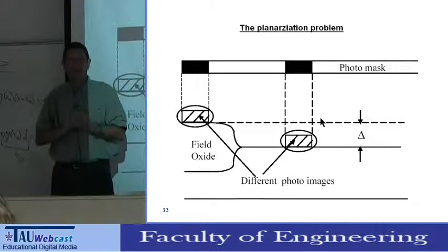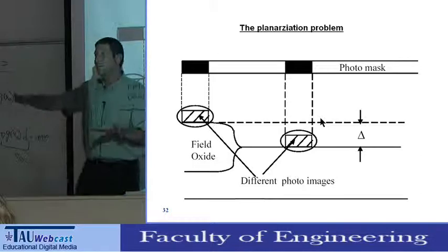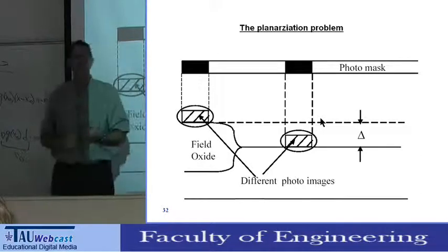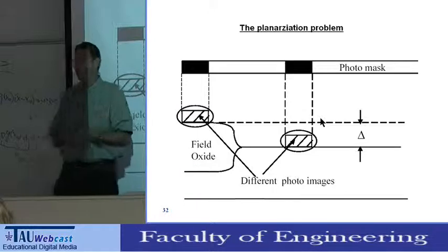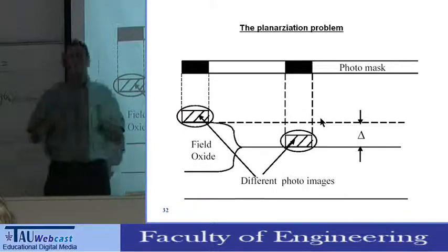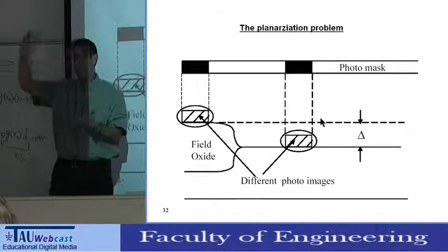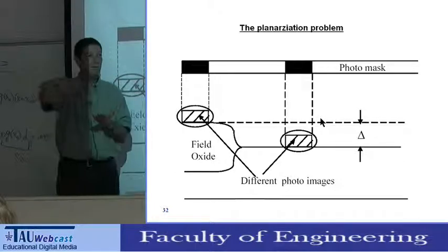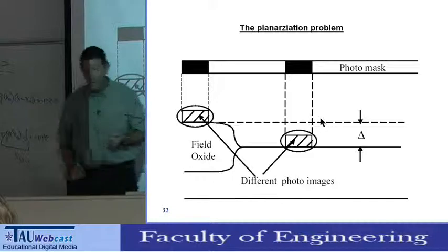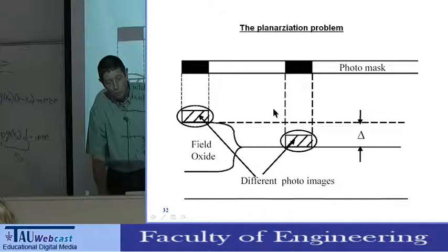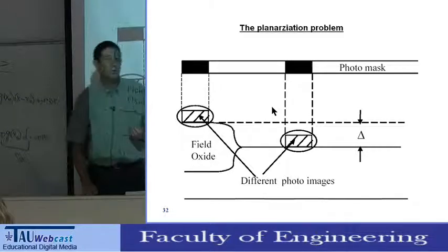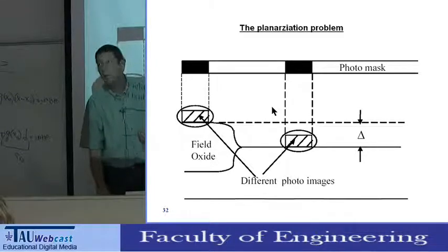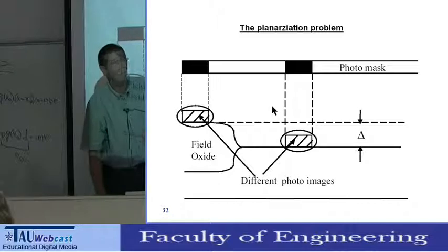About ten years ago, people started during the nano-lithography and micro-lithography process not to print on textured surfaces but to planarize the surface. So planarization became a major issue, a major factor in manufacturing. In about lecture number six or seven, we'll talk about planarization and how we planarize.